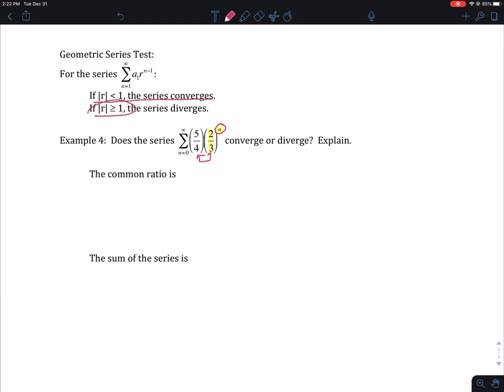And if it's bigger than one or smaller than negative one, so if r is smaller than or equal to negative one, or r is bigger than or equal to one, the series diverges. And if you're between negative one and positive one, it converges. So in this case, my common ratio is two-thirds, negative one is less than two-thirds, which is less than one. So this series converges.